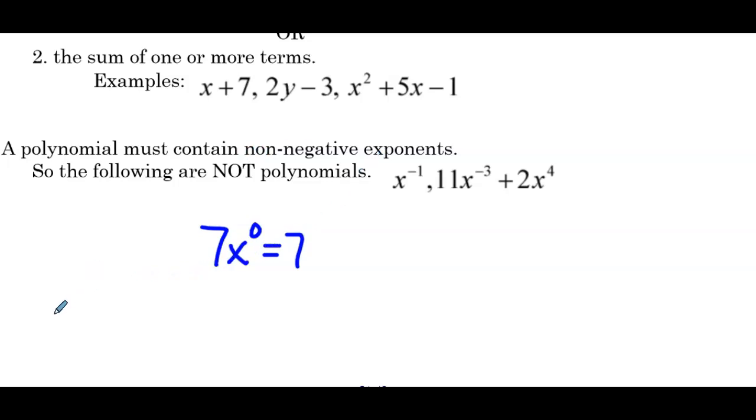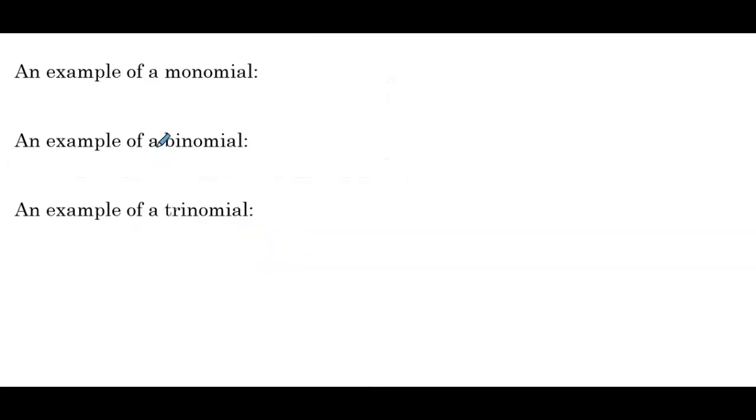So now that we've defined a polynomial, there are a few that we give special names to. So we have a monomial, a binomial, and a trinomial. So a monomial, prefix mono meaning one. So that's any polynomial with a single term. So one example would be 5x⁴. Five by itself, a monomial. x⁴ by itself, also a monomial. It's a single term. There's no addition or subtraction signs connecting multiple single term polynomials.